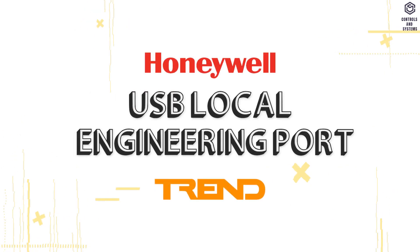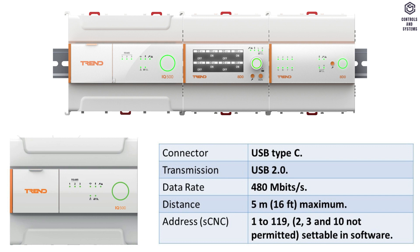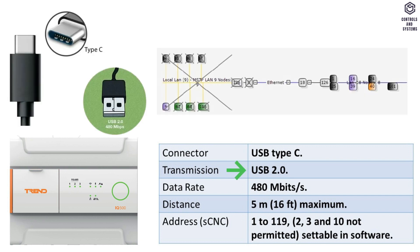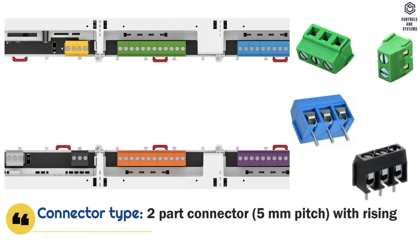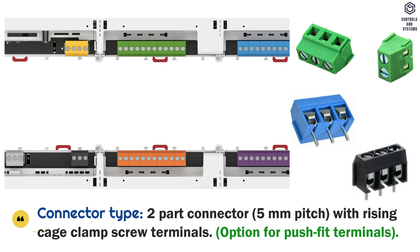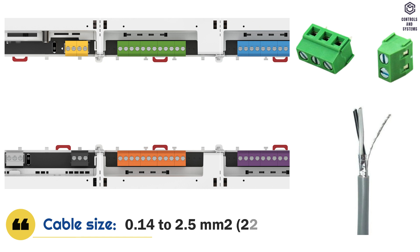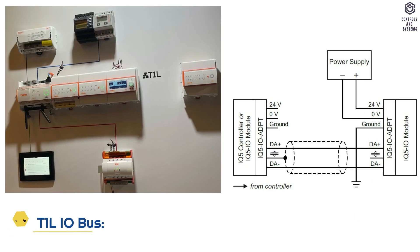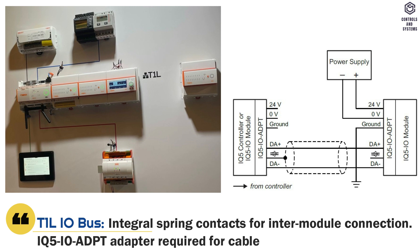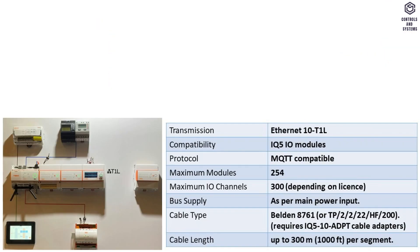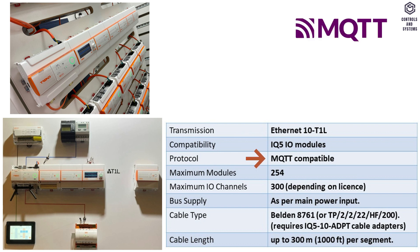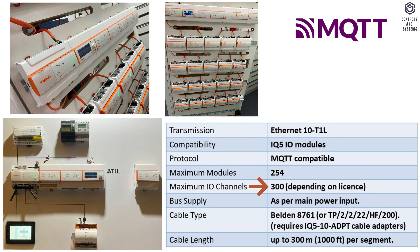USB local engineering port: this table indicates the specifications of connector, transmission, data rate, distance, and address. Connectors: connector type is 2-part connector with rising cage clamp screw terminals, cable size is 0.14 to 2.5 square millimeters. T1L IO bus uses integral spring contacts for inter-module connection. T1L IO expansion bus table indicates the specifications of transmission, compatibility, protocol, maximum modules, maximum IO channels, bus supply, cable type, and cable length.